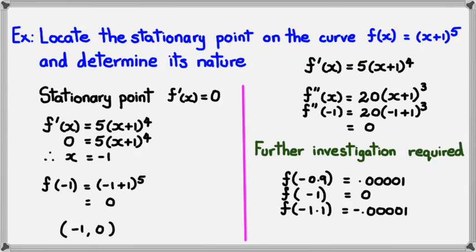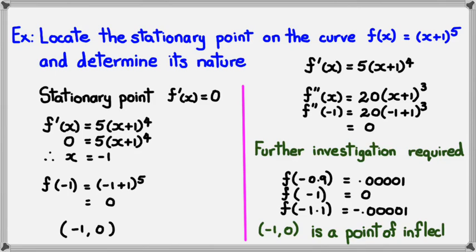If you look at f(−0.9), it's actually above 0, while f(−1.1) is actually below 0. Because of that, this has to be a point of inflection. So I can conclude that (−1, 0) is a point of inflection, confirmed by those two nearby values.